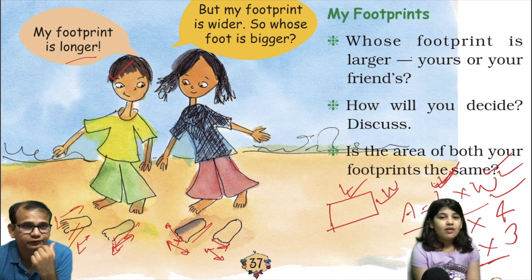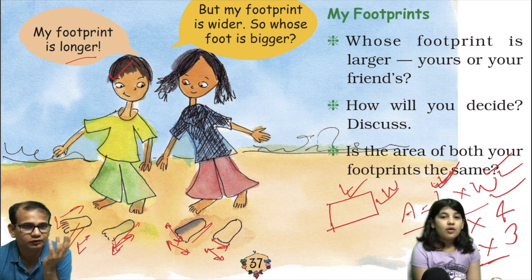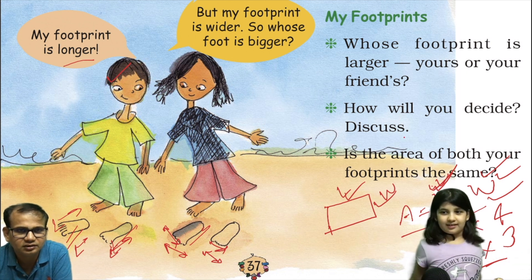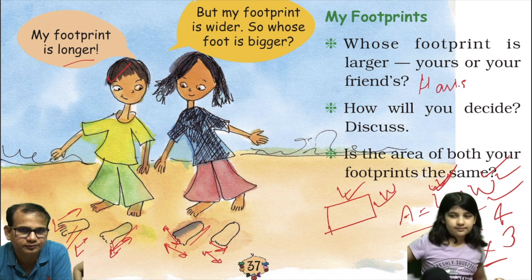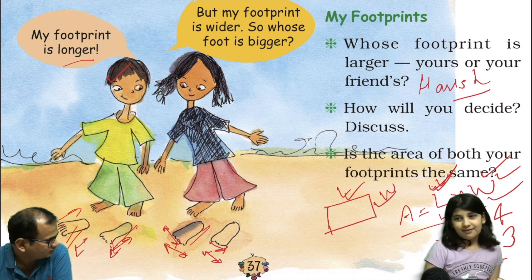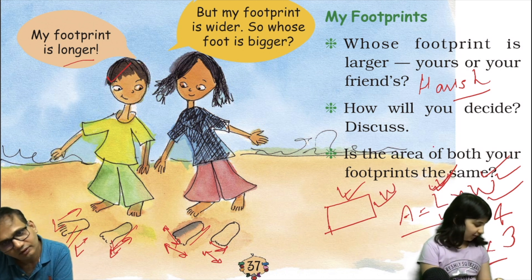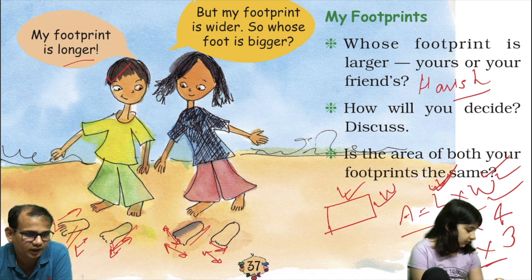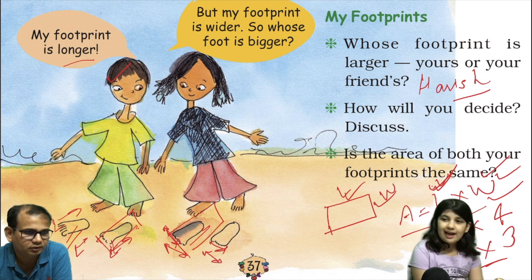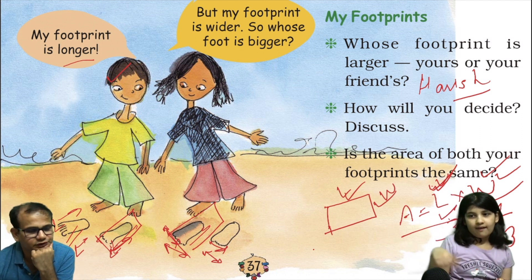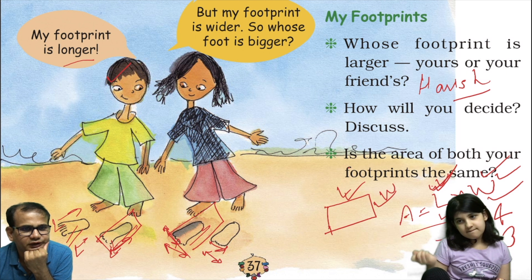So what is she asking — whose footprint is larger, yours or your friend's? Your footprint is larger than Harika, right? Havisha's footprint is larger. And how will you decide? I will decide by looking at the foot, because of the area. You have to calculate area — length and width. You have to put this one in square. And how do we calculate circular items? That doesn't look — there is a problem with that also.